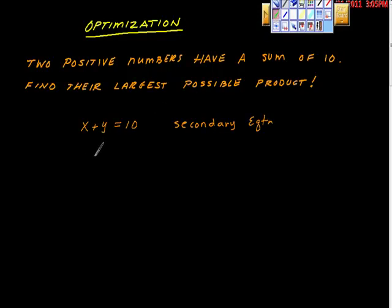Then we'll set up our primary equation, and our primary equation is that we're going to take the same two numbers, x times y, and we want them to be maxed. So this becomes our primary equation. Okay, so not bad.